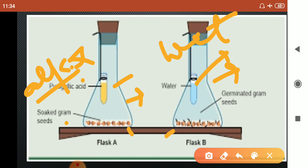Alkaline pyrogallic acid has the tendency to absorb the oxygen in the conical flask. It will absorb the oxygen in one flask. The other has plain water. That is a controlled setup.